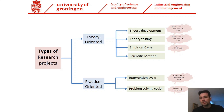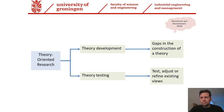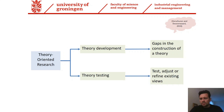Nonetheless, when you define cycles, it means they are highly connected to the type of research you will do — whether theory-oriented or practice-oriented. In theory-oriented research, we have normally two branches: theory development and theory testing. Theory development addresses gaps in the construction of a theory — and I am using the jargon of the book here. What are these gaps?